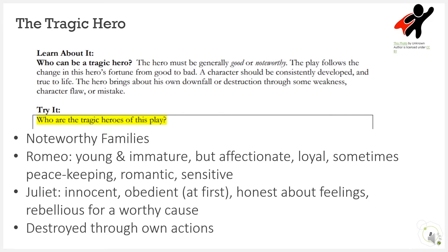They are both from noteworthy families. Romeo begins as a young and immature boy, but he's also affectionate and loyal, and sometimes keeping the peace. We see him as romantic and sensitive, but then we also see his own pride and anger lead to his downfall and destruction. Juliet begins as innocent, obedient to her parents at first, and then we see her consistently honest with her feelings throughout the play. We then see that she becomes rebellious for a worthy cause. Would you consider her a tragic hero? Both characters are destroyed by their own actions and possibly their own character flaws.